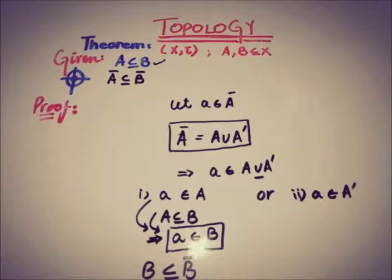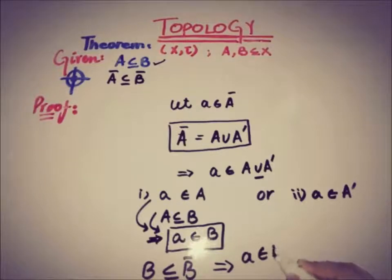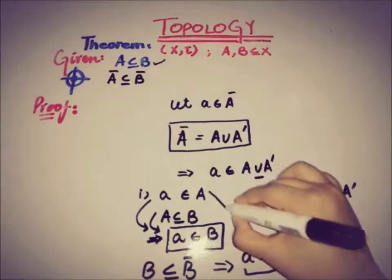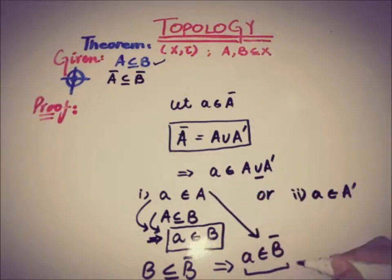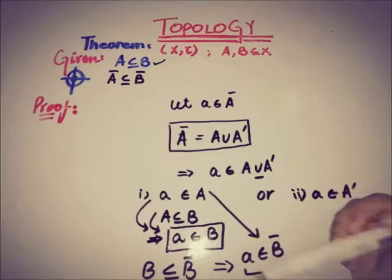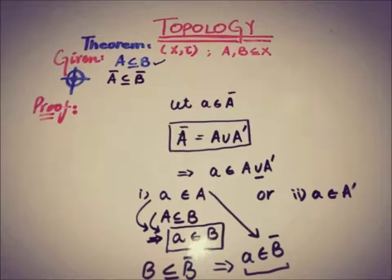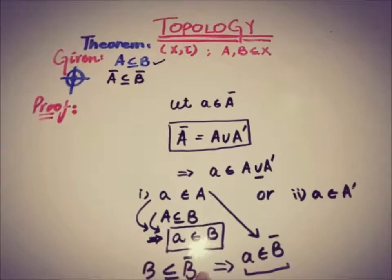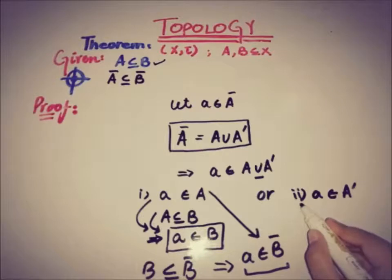So in Case 1, by using the given condition A ⊆ B, we have a ∈ B, and then by the definition of closure of the set B, we conclude that a ∈ B̄.